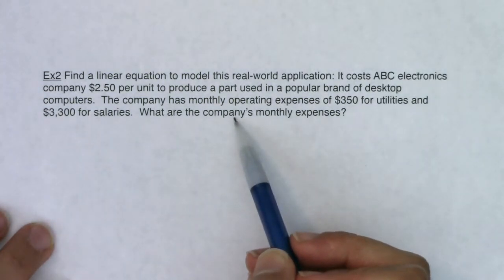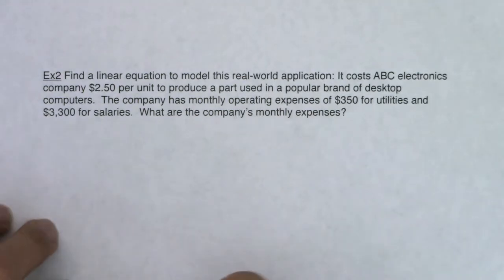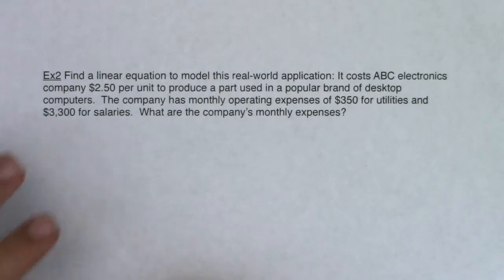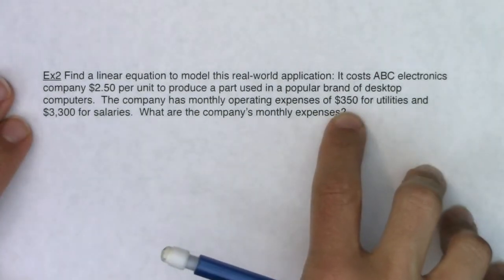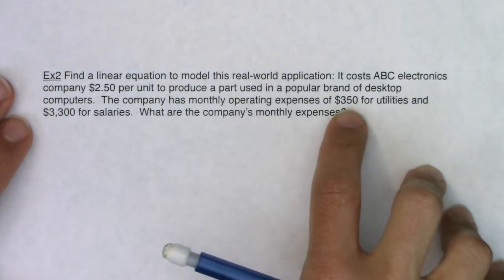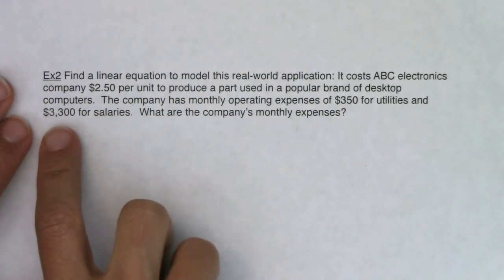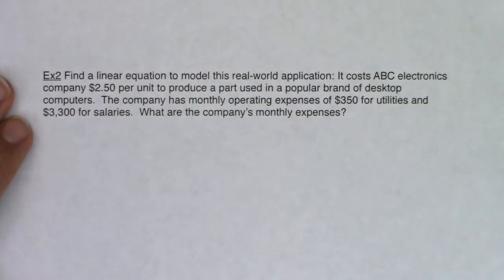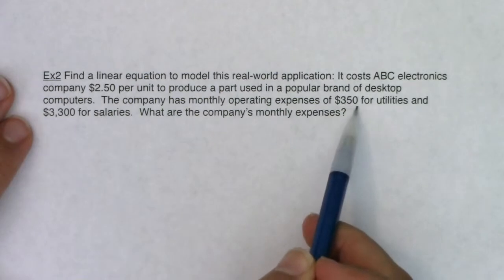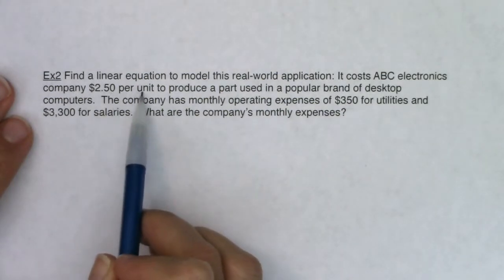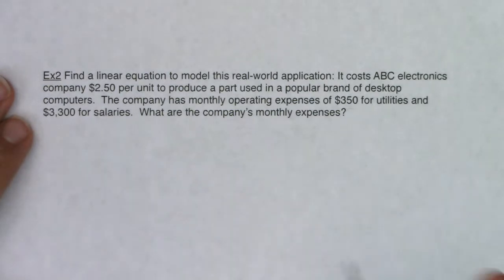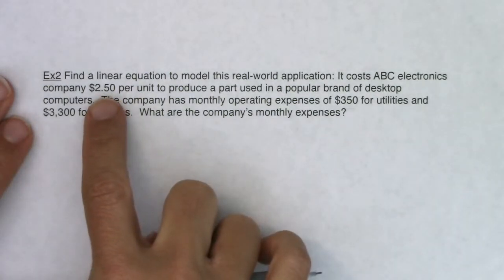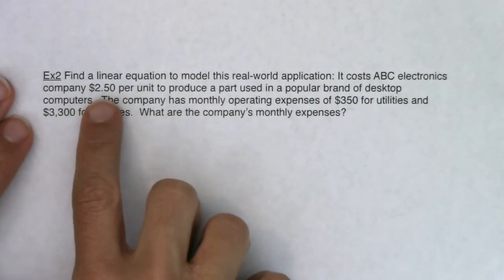I want to figure out how much this company is going to spend each month. I always go back to: what is the variable? Let's see what's varying in this problem. It sounds like this company has some fixed costs — they have to spend $350 on utilities and $3,300 on salaries, so that's going to happen no matter what. But the variable here is that in addition to utilities and salaries, they're spending $2.50 per unit to produce a part that goes into desktop computers. So the variable in terms of their monthly expenses will be how many parts they produce.